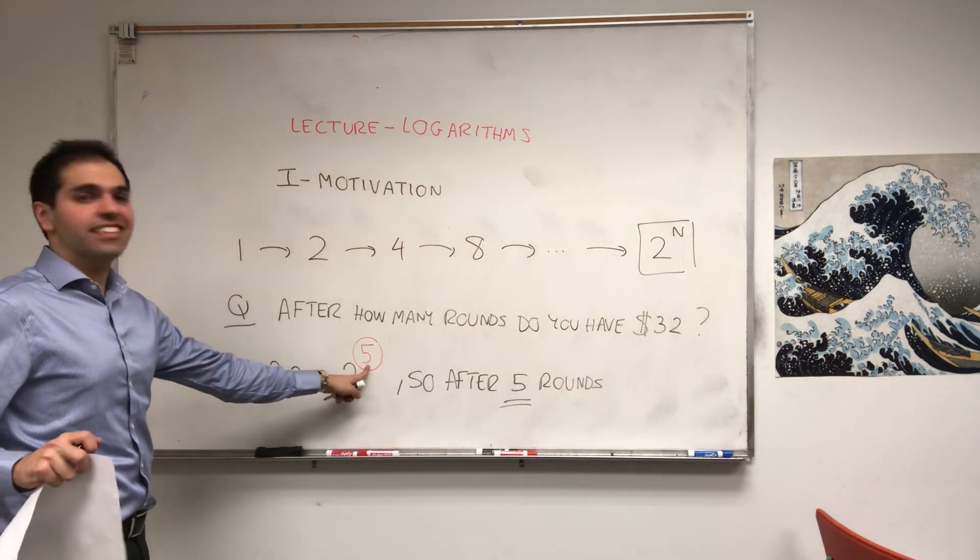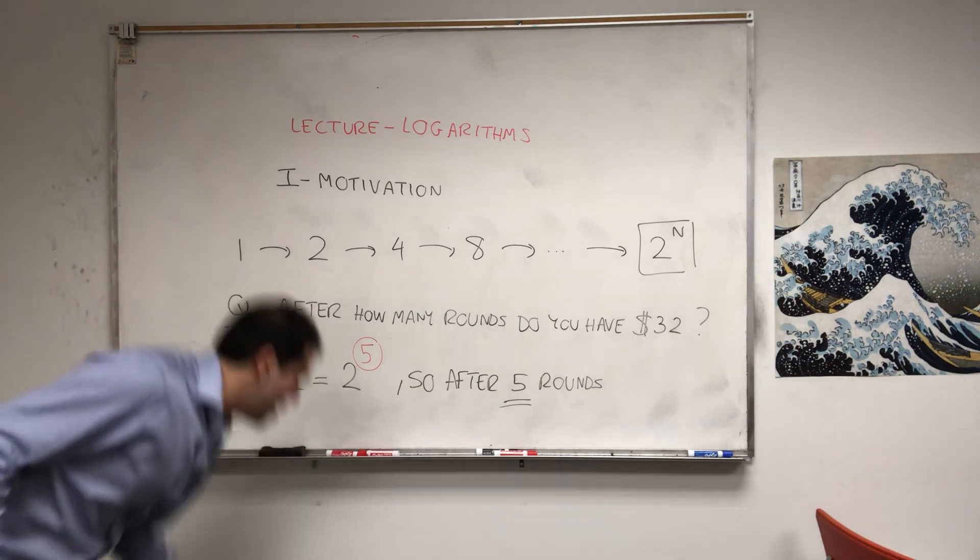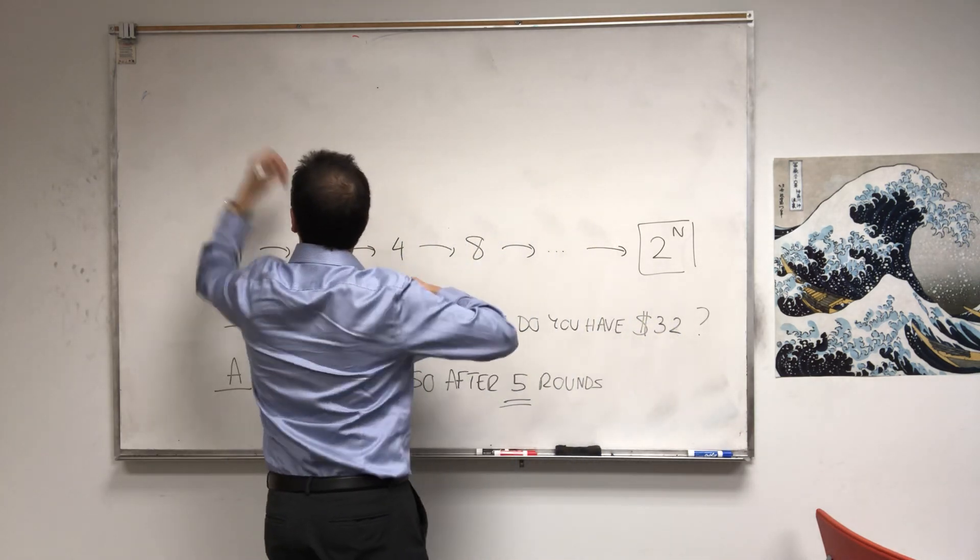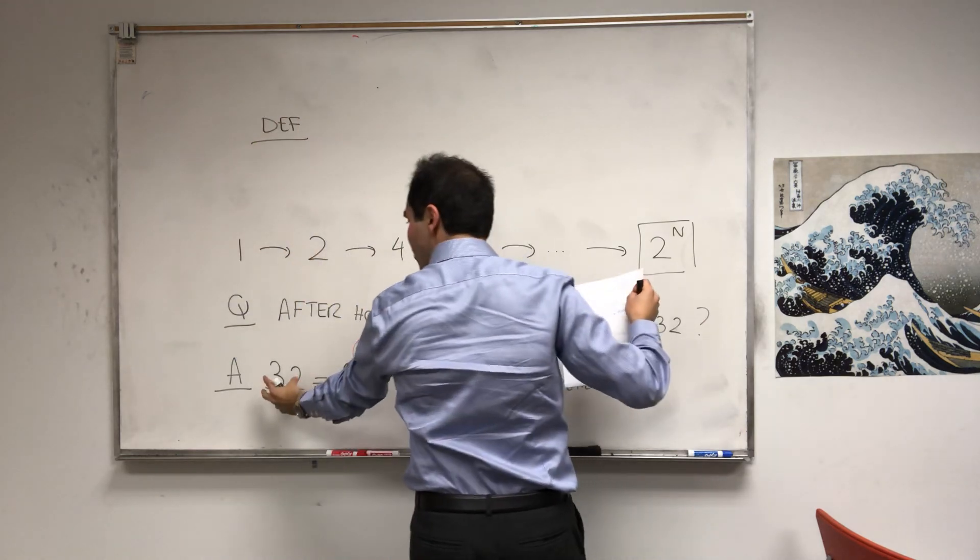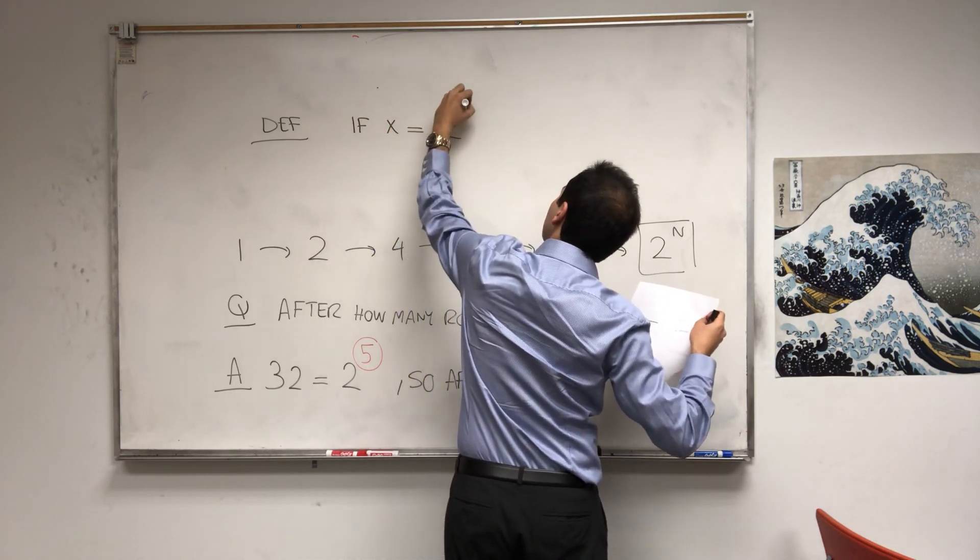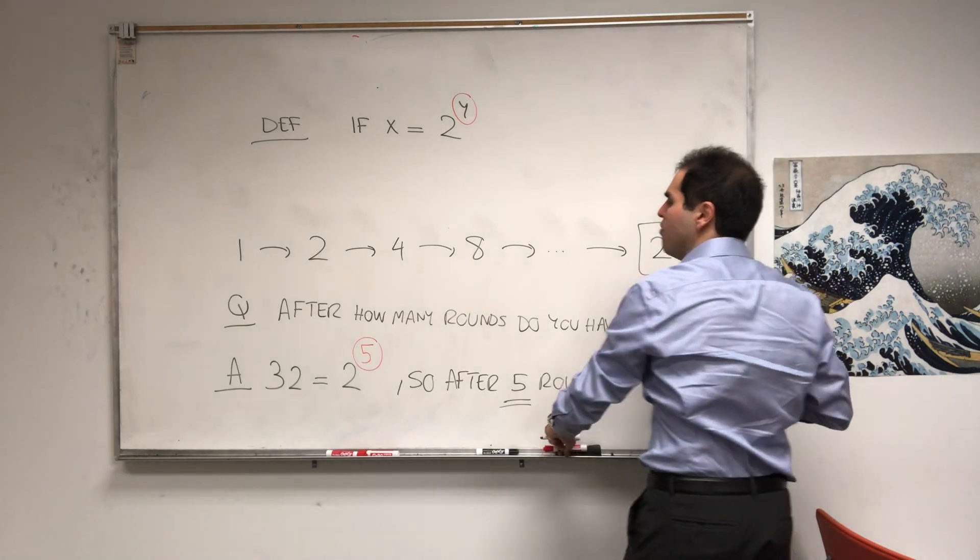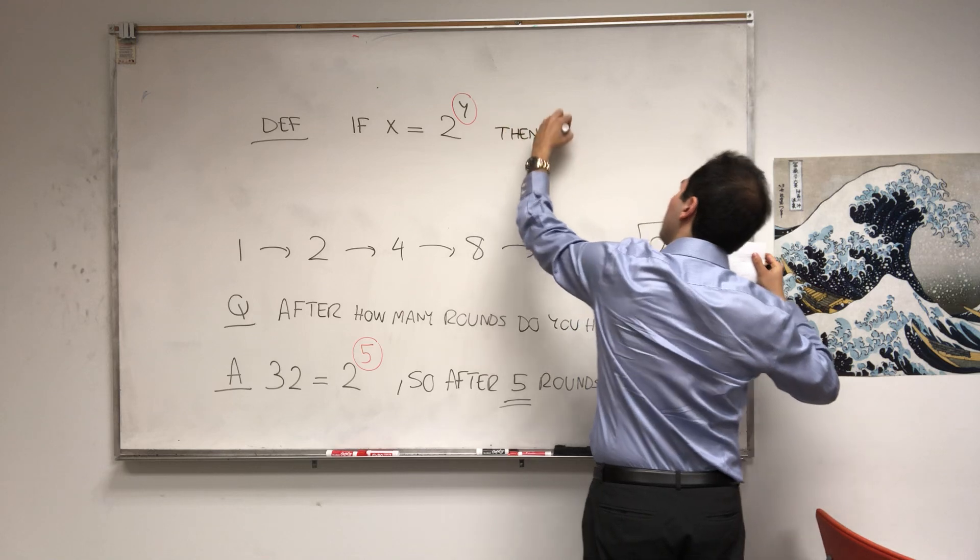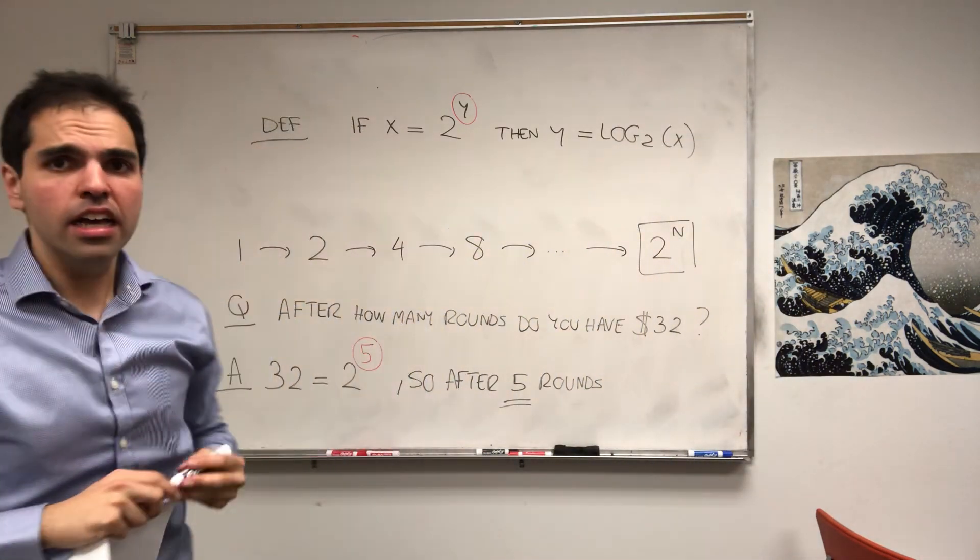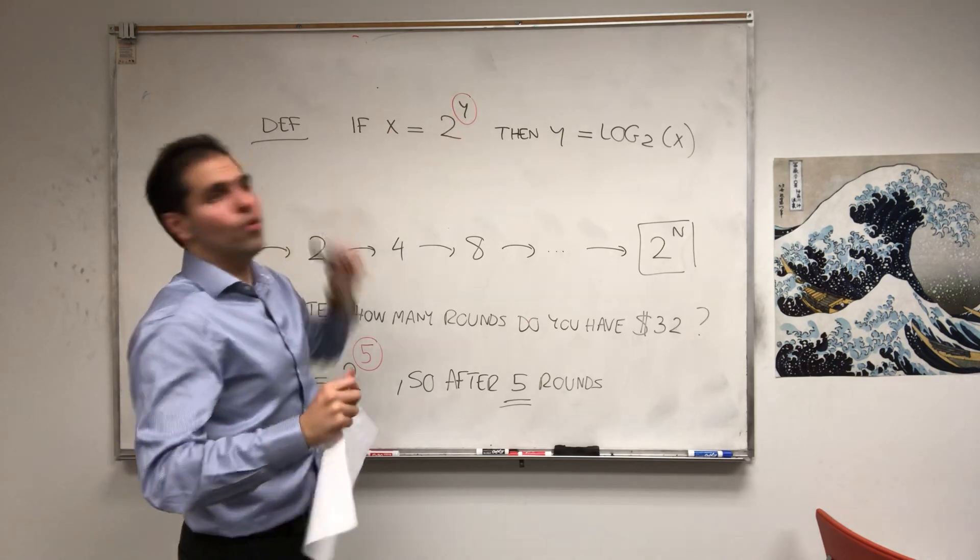And you see, this exponent is so important, it has its own little name called the logarithm base two. And so, that's the most important definition for today. Namely, if you can write x as 2^y, then that y, we call it the log base 2 of x. In other words, the log is nothing other than the exponent you have to raise two to in order to get x.